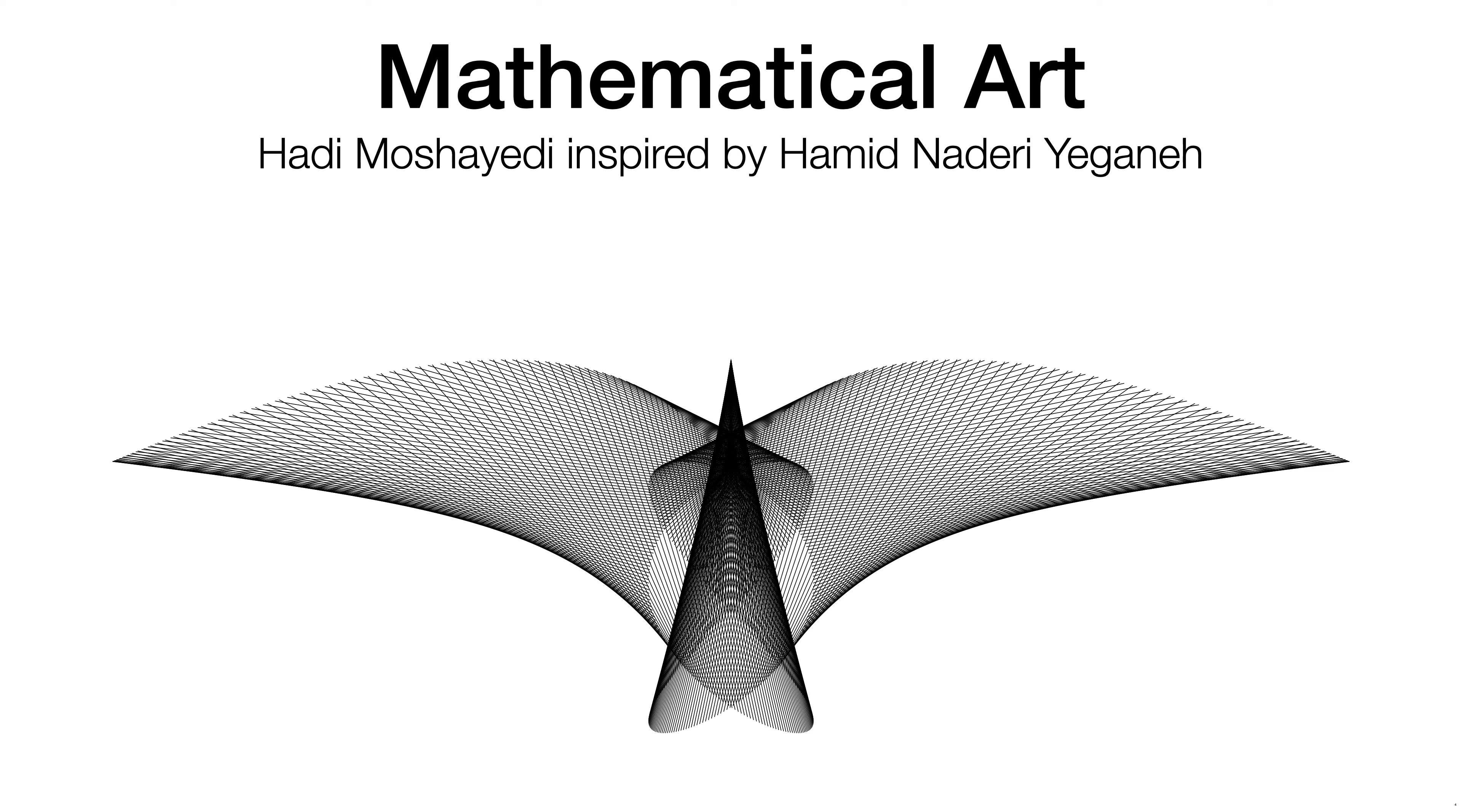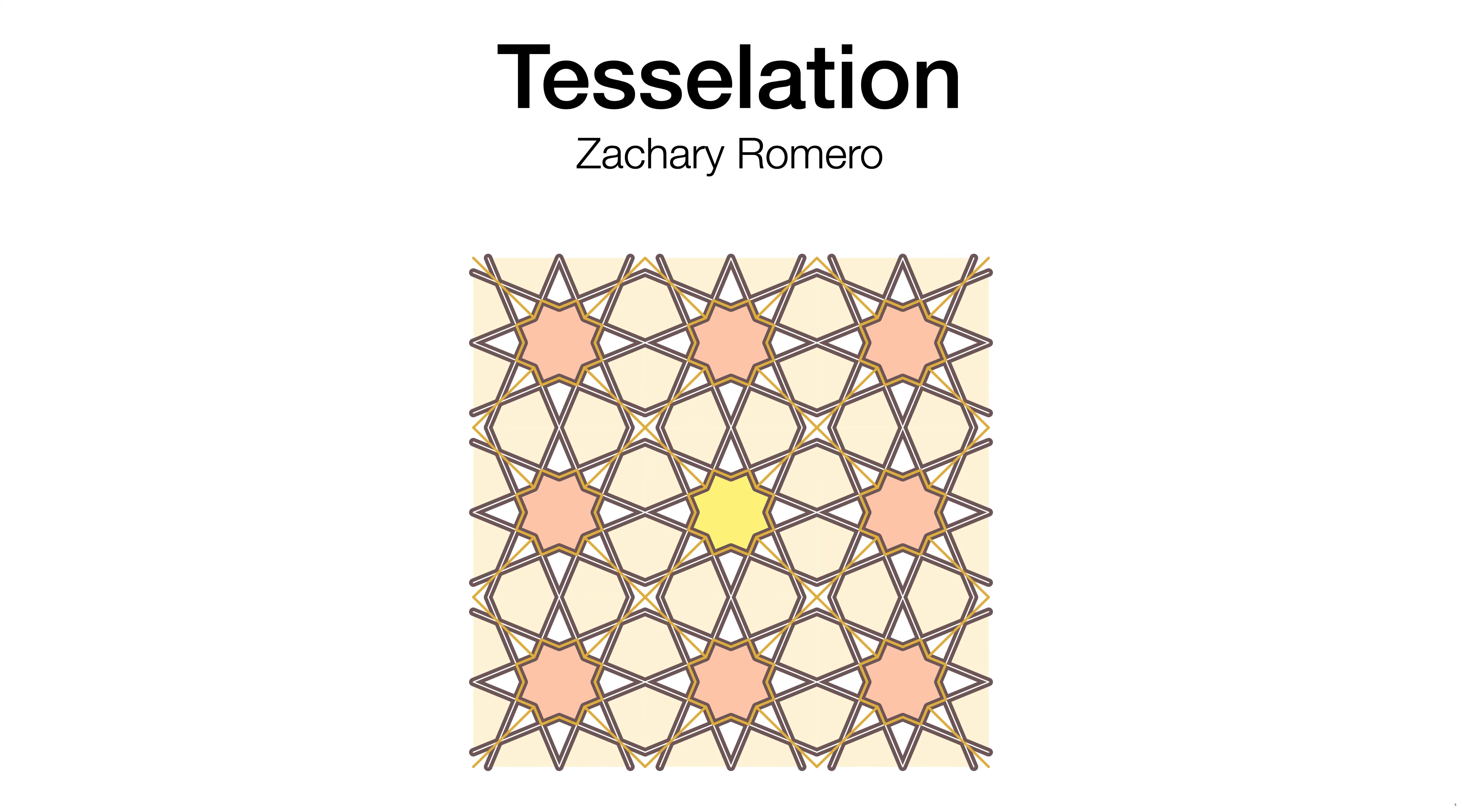This example is of a more artistic nature. It is Hadi who wrote the MetaPict code, and he was inspired by a series of similar artistic figures by Hamid Naderi. This example is by Zachary Romero, who was inspired by the tradition of tessellation in the Muslim world. He has written a library so you can use it to make your own tessellations.